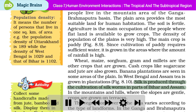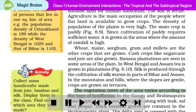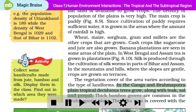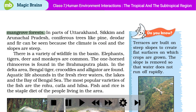In the mountains and hills, where the slopes are gentle, crops are grown on terraces. The vegetation cover of the area varies according to the type of landforms. In the Ganga and Brahmaputra plain, tropical deciduous trees grow, along with teak and sal. Thick bamboo groves are common in the Brahmaputra plain. The delta area is covered with the mangrove forests. In parts of Uttarakhand, Sikkim, and Arunachal Pradesh, coniferous trees like pine, deodar, and fir can be seen because the climate is cool and the slopes are steep.